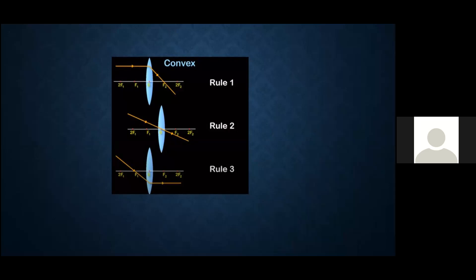We can see there is a principal axis. There will be different points. We'll see the point in the center, which is O — the optical center — and F1 and F2, which are the principal foci. There will be three rules for the light that are going to pass from a position. First, rule one.